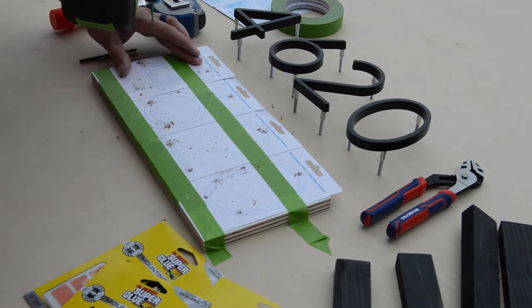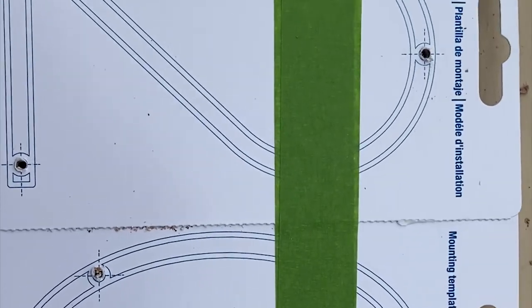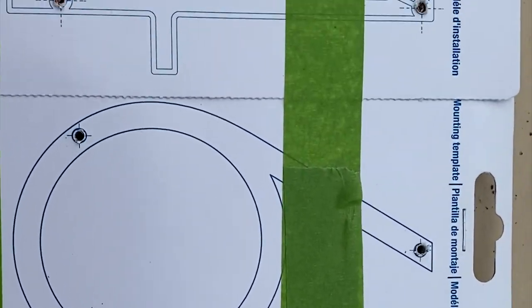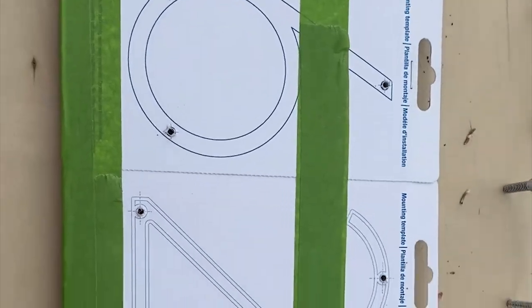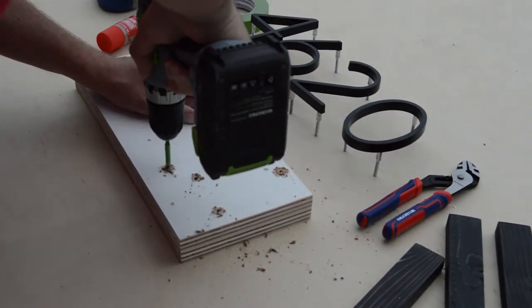So the instructions on the numbers said start out with an 1/8 inch drill bit to do your pilot holes. Then come back with a 3/16ths bit. Both bits you need to cut a max depth of 1 inch. That way the studs on the numbers will set correctly.